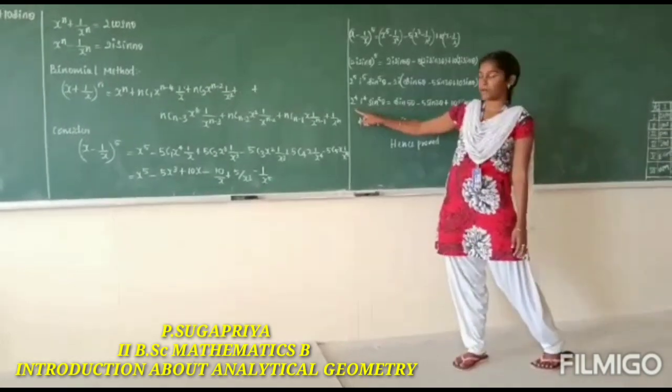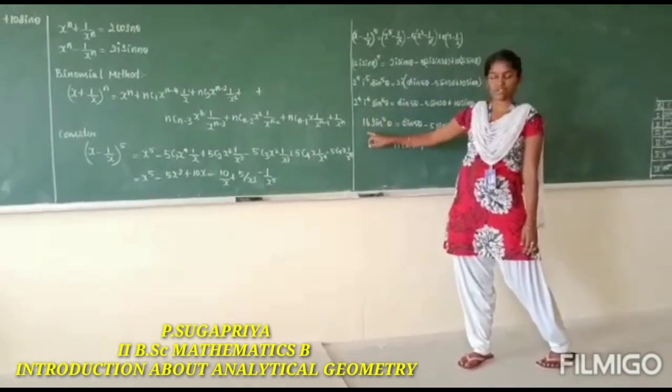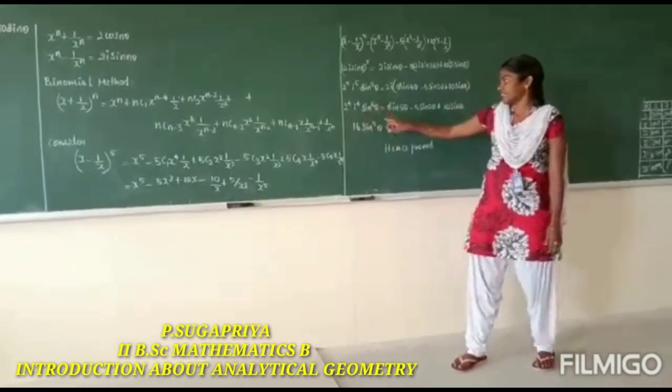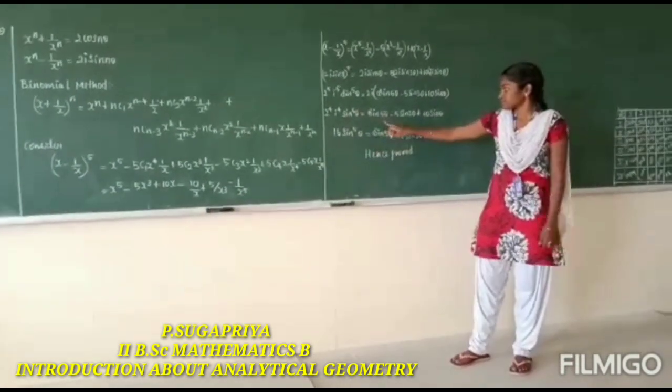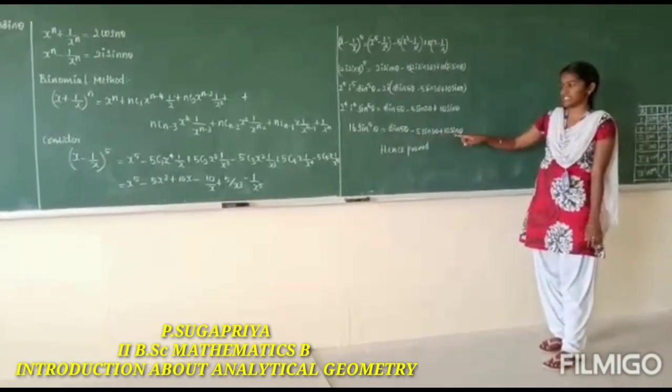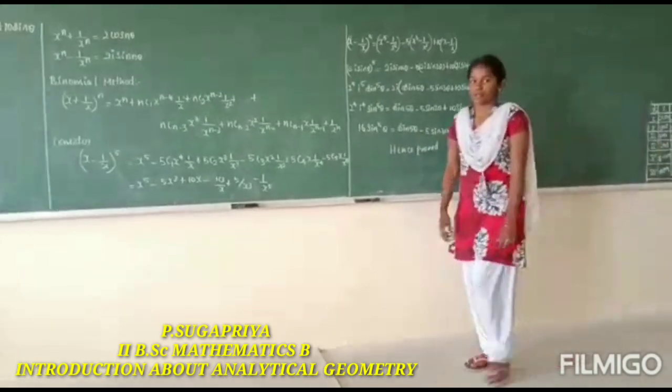We know 2^4 is 16, i^4 is 1. So 16 sin^5 theta equals sin 5 theta minus 5 sin 3 theta plus 10 sin theta, hence the proof. Thank you.